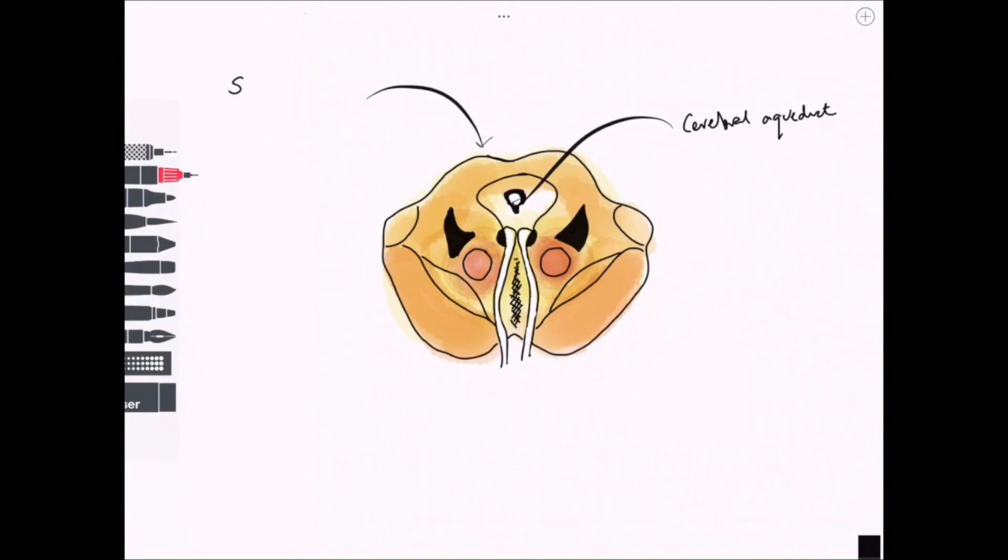So the cerebral aqueduct allows for the travelling CSF from the third to fourth ventricles. The superior colliculus is the nodule that sticks out posteriorly that helps us recognize this level, which I mentioned before and we saw on the posterior view of the brainstem.